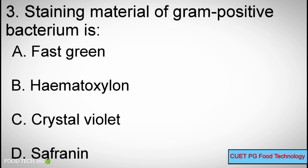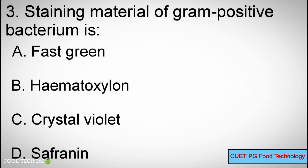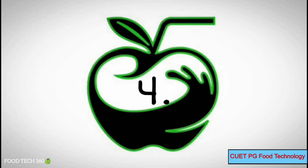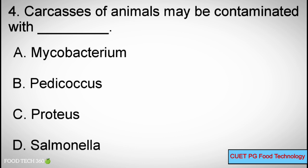Question number 3: Staining material of gram-positive bacterium is — Options: A) Fast green, B) Hematoxylin, C) Crystal violet, D) Saffron. Correct answer: C) Crystal violet.